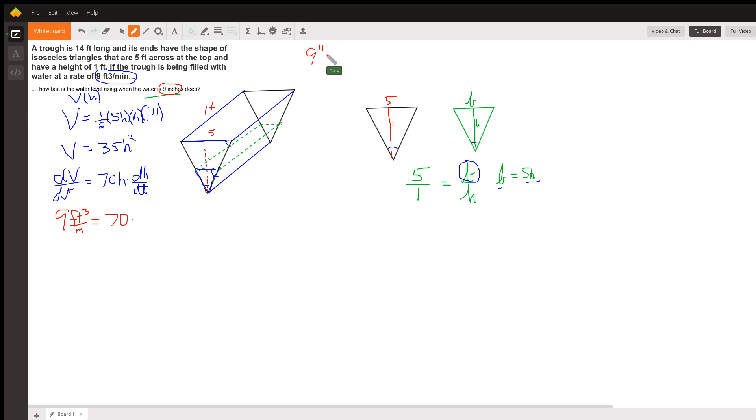so 9 inches to feet so 9 inches in feet is 9 12ths of a foot which is 3 4ths of a foot so that's what we put in here